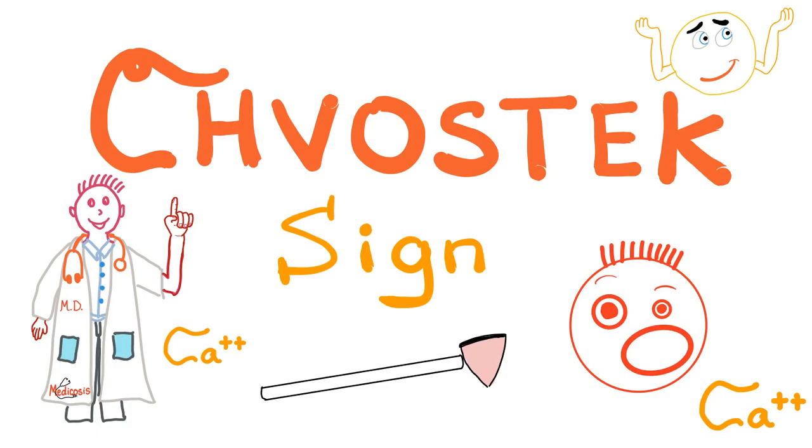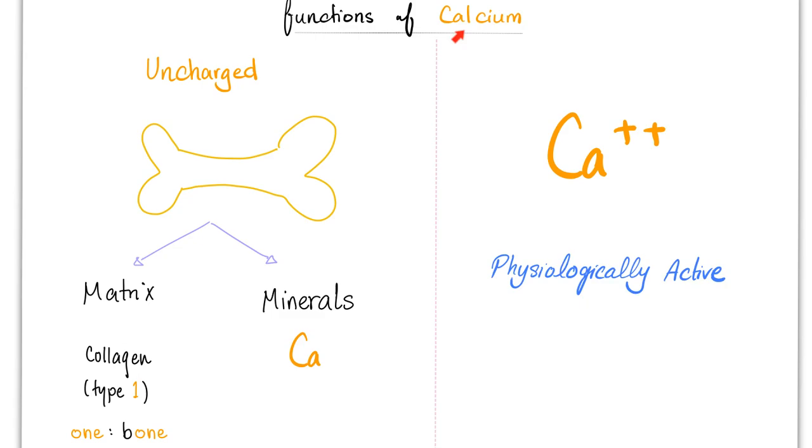Hey, it's Medicosis Perfectionellus, where medicine makes perfect sense, and today we'll continue our series called Science in Medicine. In previous videos, we have talked about Homan's sign, Kernig's sign, Brudzinski's sign, and Gower's sign. Today it's time for Chvostek's sign, seen in hypocalcemia or tetany. With that said, now let's get started.